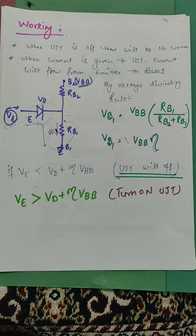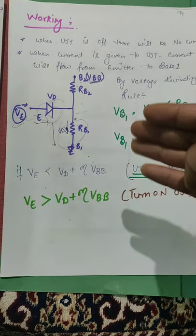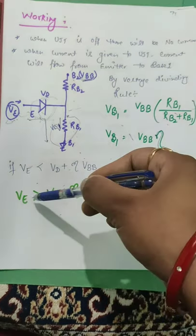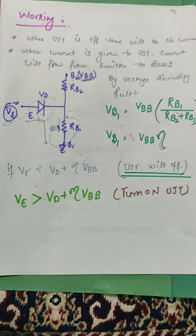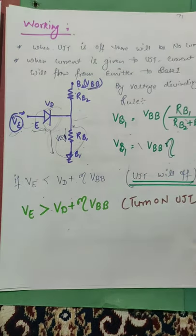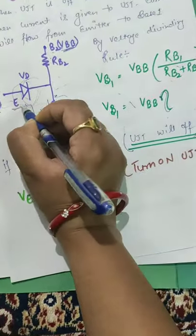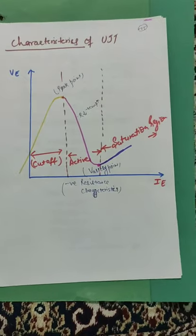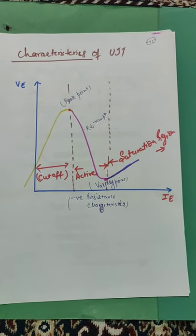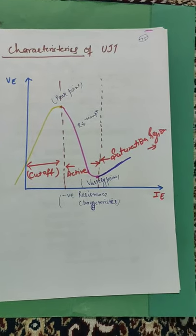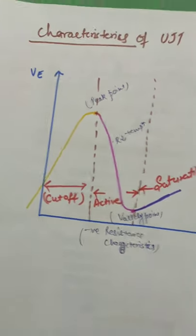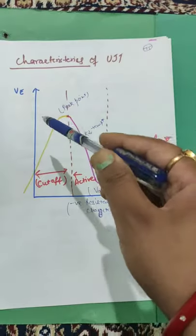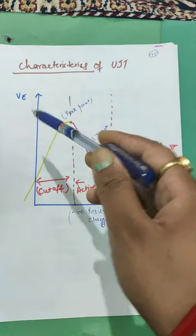And a current will flow. This is the characteristics of UJT. We can see that the current characteristics are given by VE and IE — emitter voltage and emitter current. When we apply voltage to VE, emitter current IE increases. VE will increase up to the peak point, which is VD plus eta×VBB.